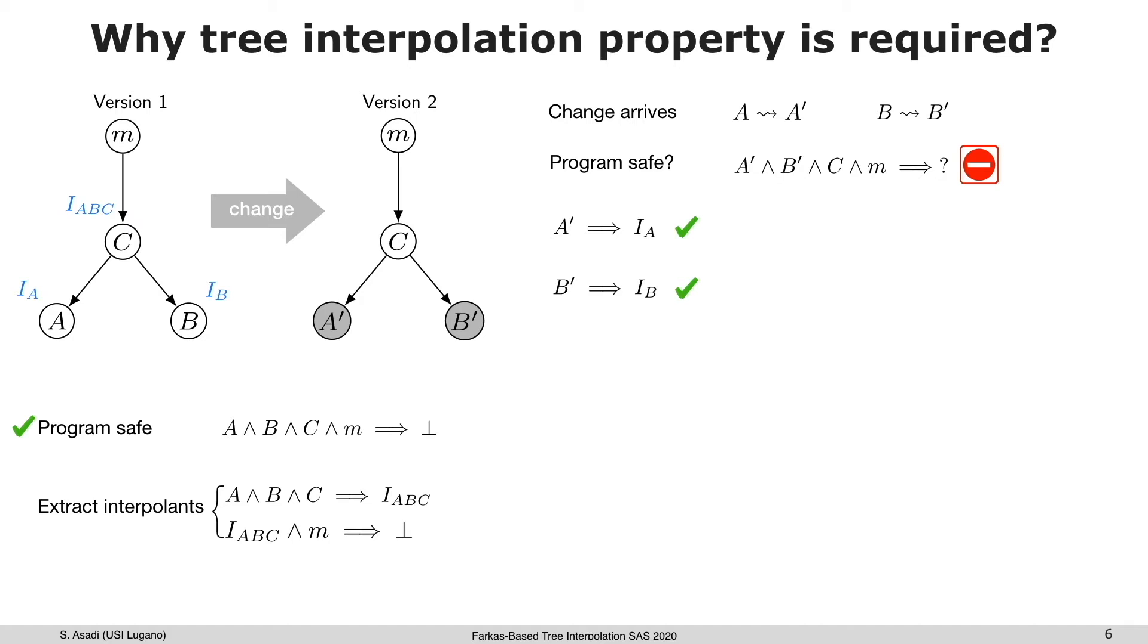But this is not enough to conclude that the second version is safe. There must be some relation among interpolants that guarantee the soundness. The TIP says that the interpolant of A and the interpolant of B together with the body of C need to imply the interpolants of their callers. With this, we can conclude that the second version is safe without computing the full formula of the program.